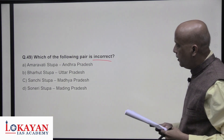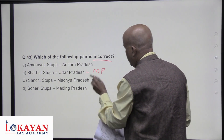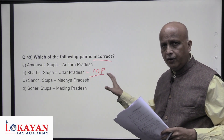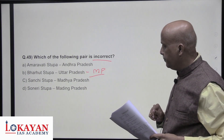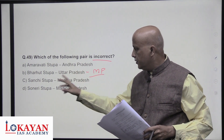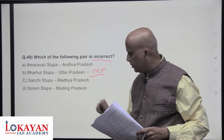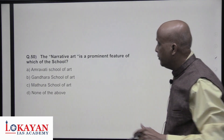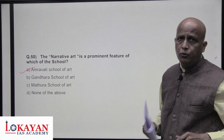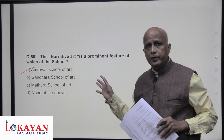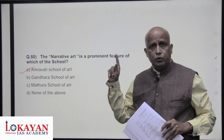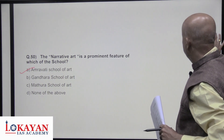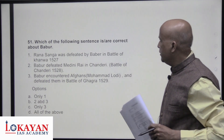Which of the following pairs about stupas is incorrect? Bharhut Stupa is from the Shunga period in Madhya Pradesh — correct. Amaravati is in Andhra Pradesh, Sanchi in Madhya Pradesh. The narrative art is an important feature of the Amaravati school of art, which is the most decorative school developed in India during the Satavahana period — the first school of art in South India, and first to use marble in Indian art.